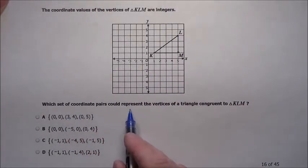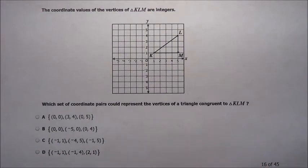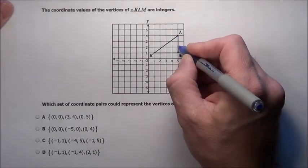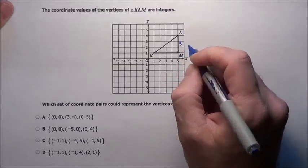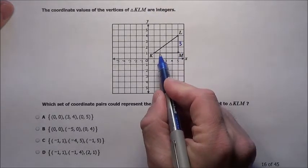Which set of coordinate pairs could represent the vertices of a triangle congruent to it? So I need to find another triangle that's exactly the same as that. The legs are going to be the exact same length. The angles would be the same. Well, let's look. I can see this is 1, 2, 3. I can see this side is 3, 1, 2, 3, 4.